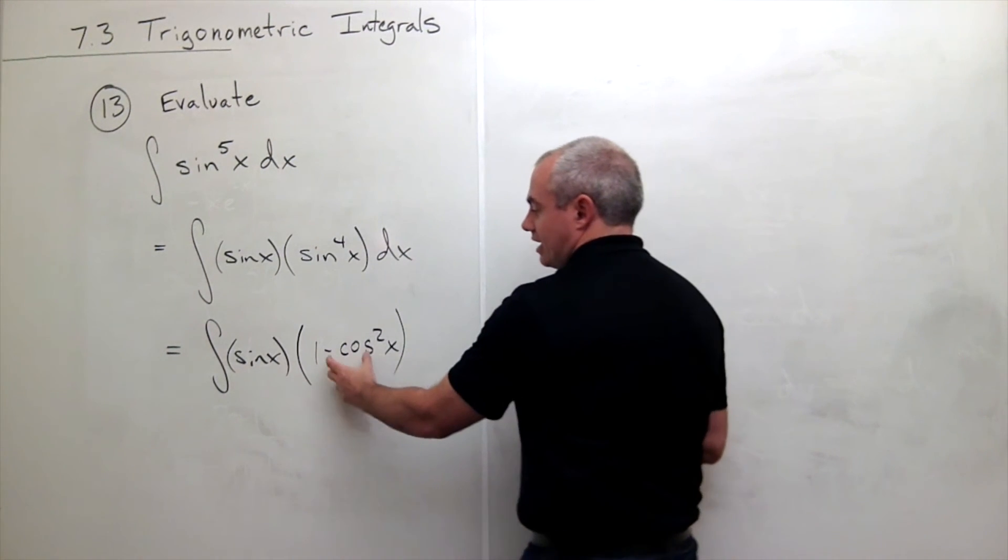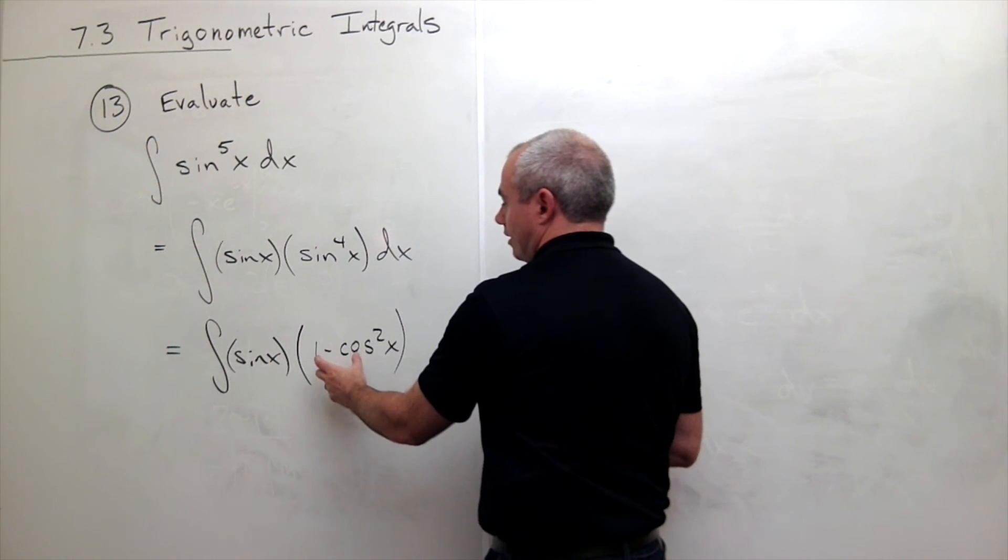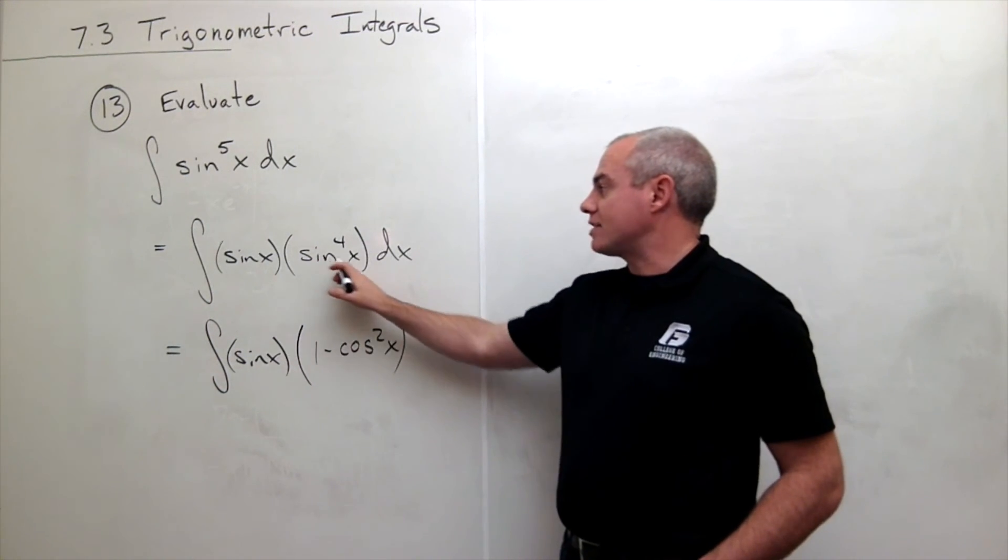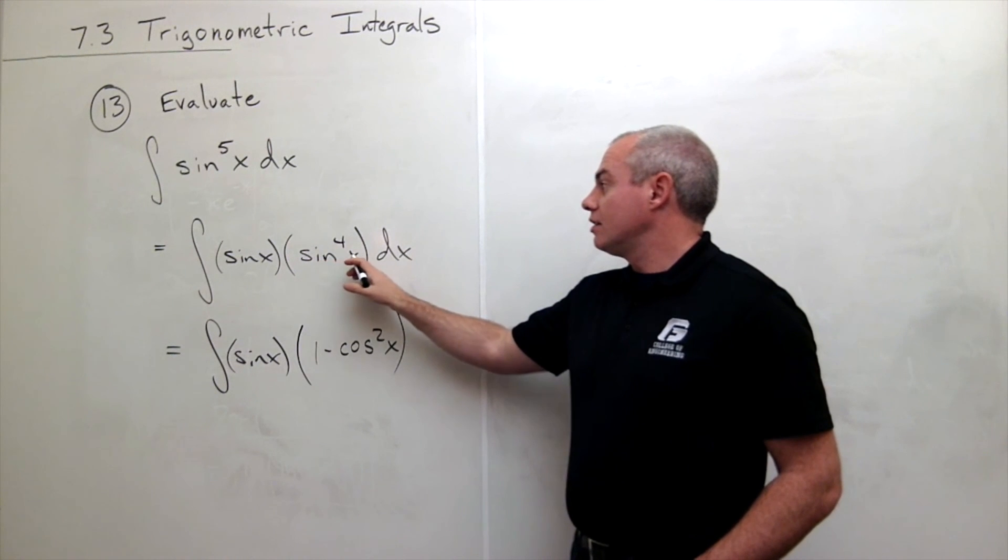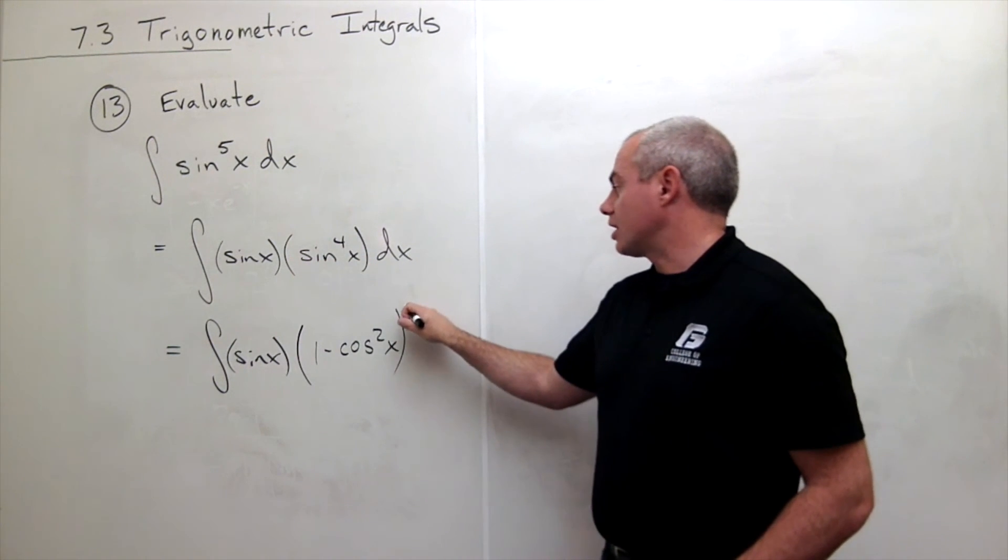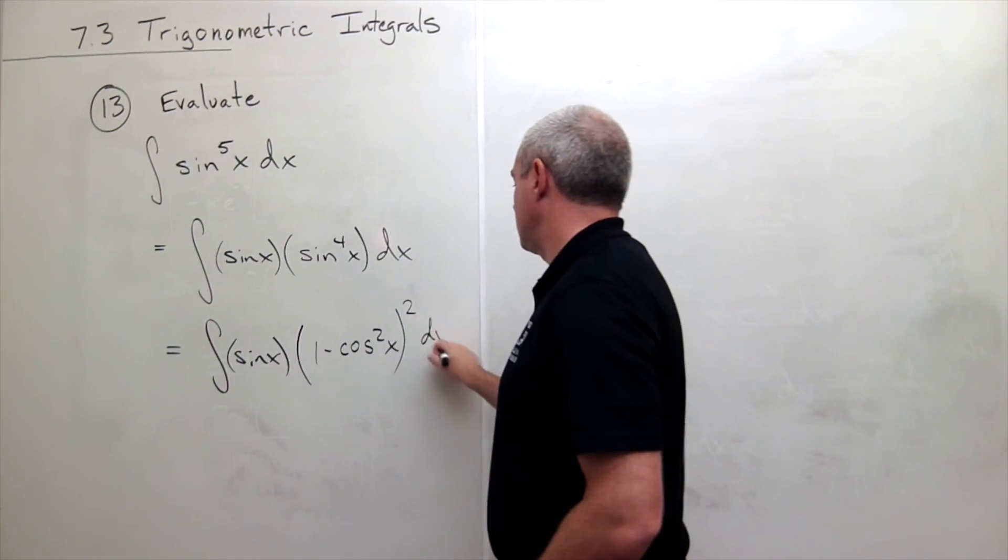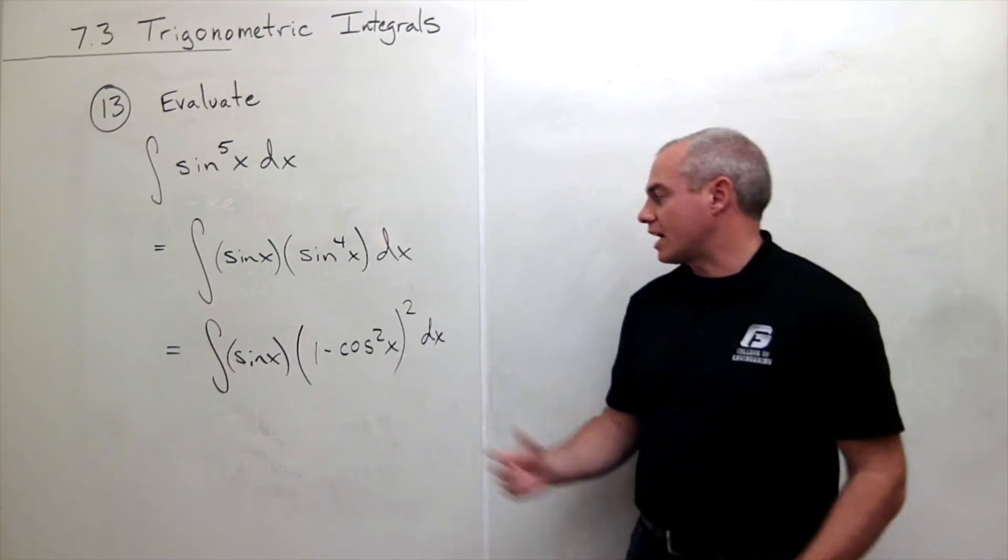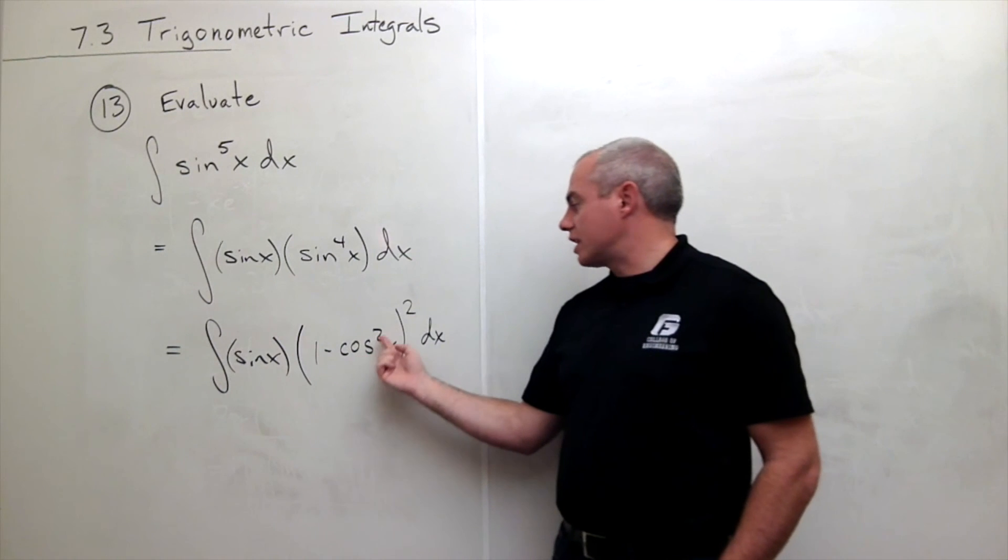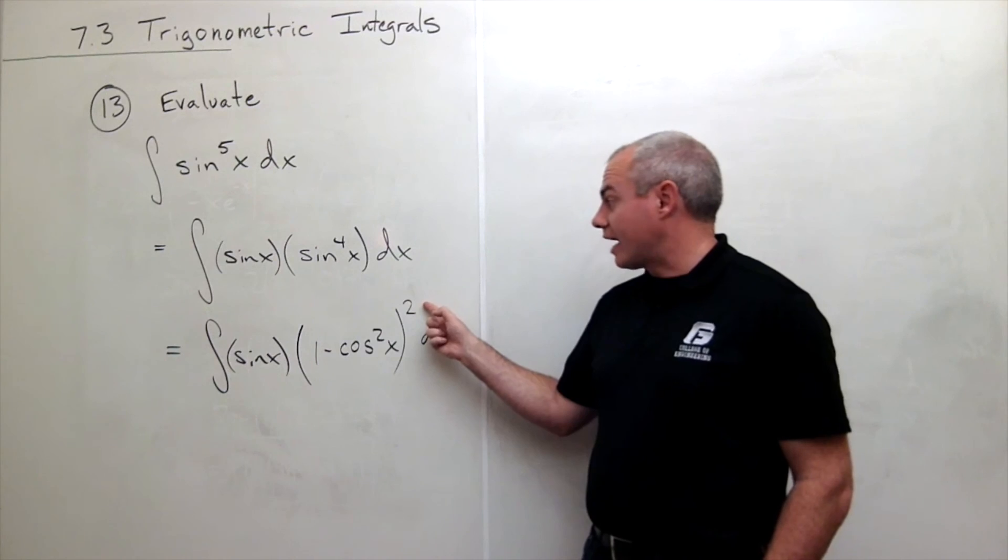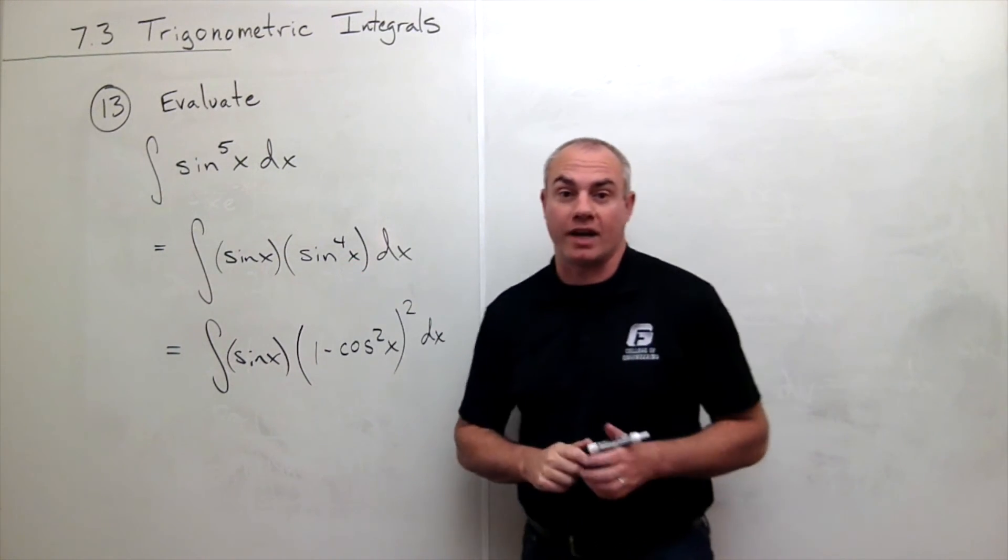So this is one minus cosine squared of x. Remember, this is sine squared of x. I don't have sine squared of x here. I have sine to the fourth of x. So I'm going to square this. One minus cosine squared of x, that's the same thing as sine squared of x. And then I square that and I get sine to the fourth of x.